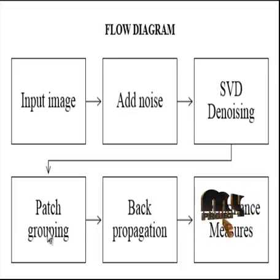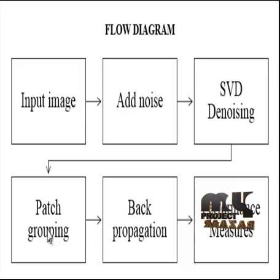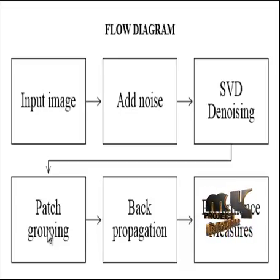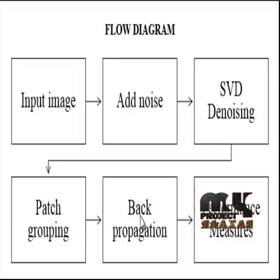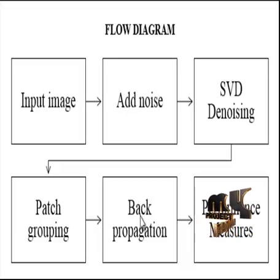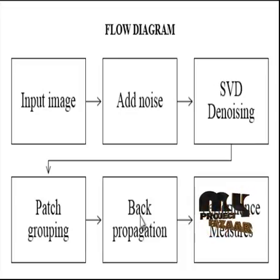In the low rank process, the approximation value is calculated based on the probability of the patches. Based on the calculated probability, the patches are grouped resulting in the optimized image, which is then used for further processing. After the patch grouping process, back propagation is employed. In the back propagation process, noises occurring due to pixel grouping based on the low rank approximation are removed. The back propagation process repeats the SVD process again for the resulting image.